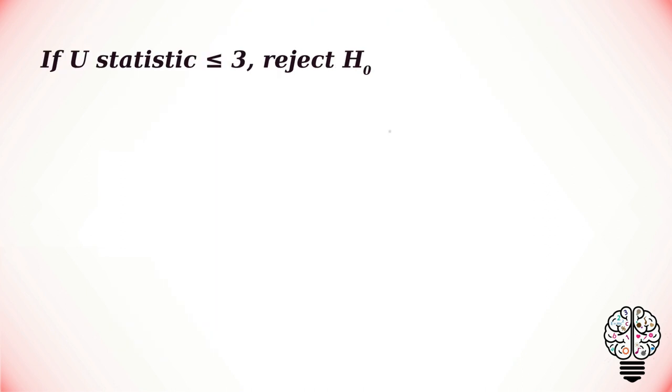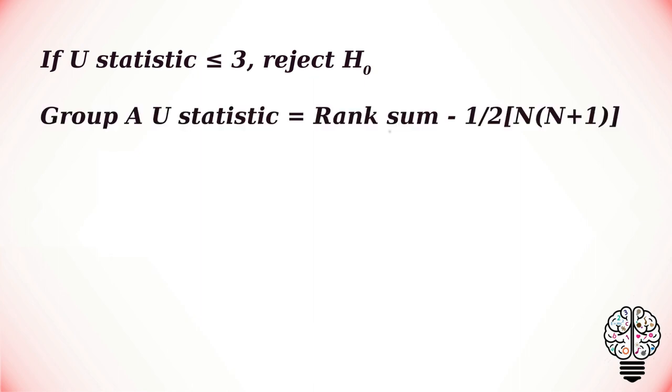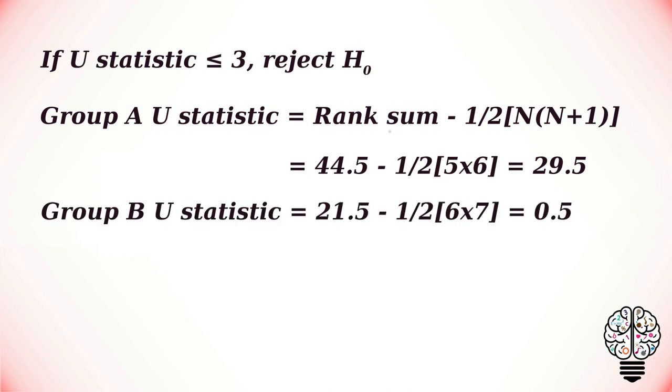The condition is that if our U statistic is less than or equal to 3, then we have to reject our null hypothesis. To calculate the U statistic, we use the formula: rank sum minus 1/2 of N times (N+1), which gives us 29.5 for group A and 0.5 for group B.